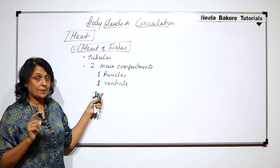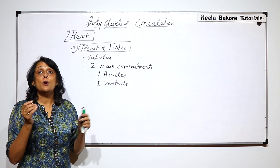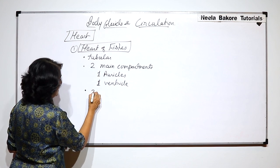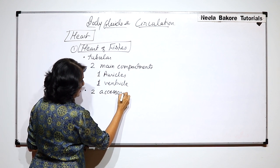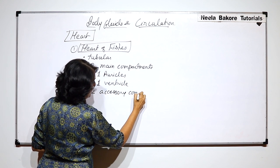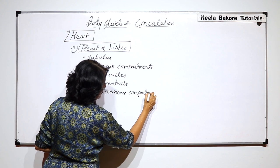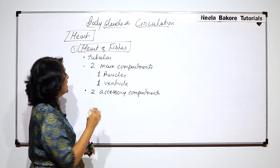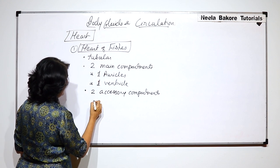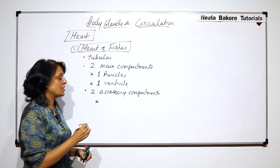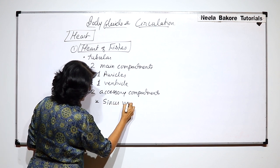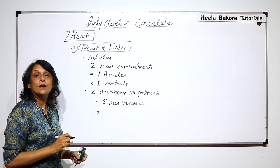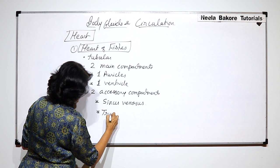And why are these main compartments? Because there are two helping compartments. We call them accessory compartments. Accessory compartments means that they have a function. And which are accessory compartments? One is sinus venosus and the other one is truncus arteriosus.